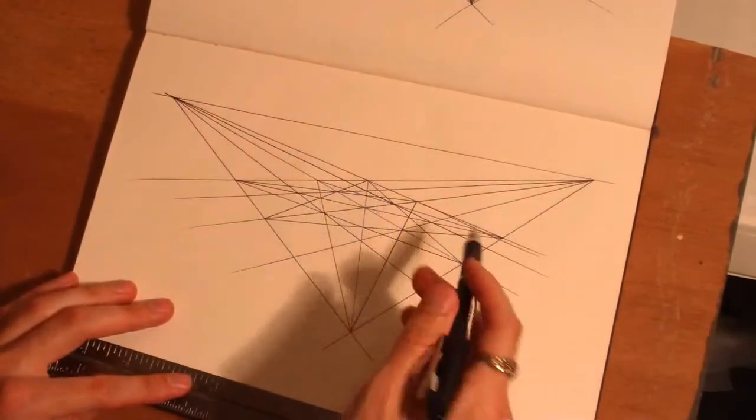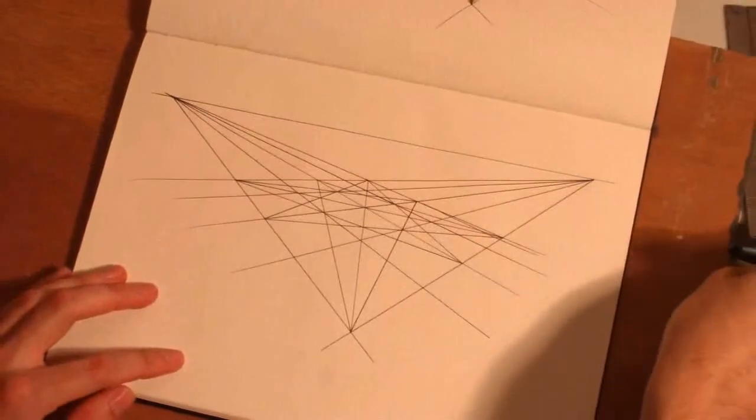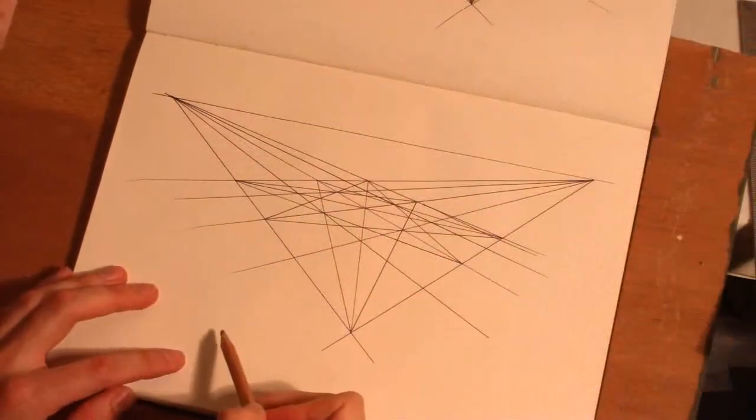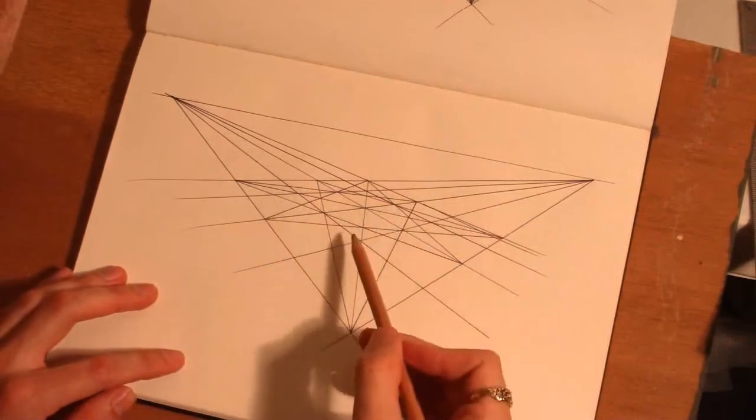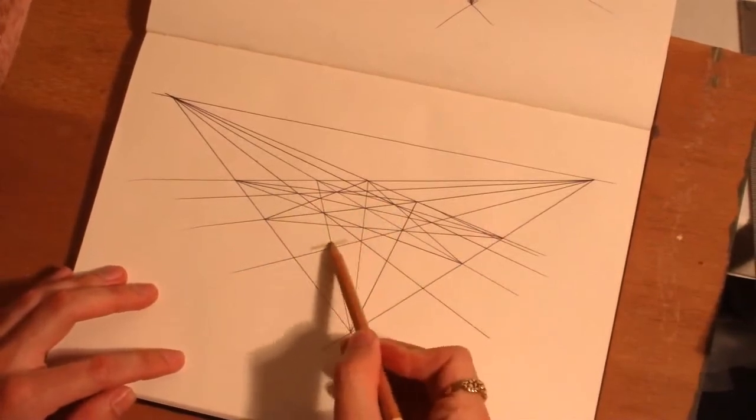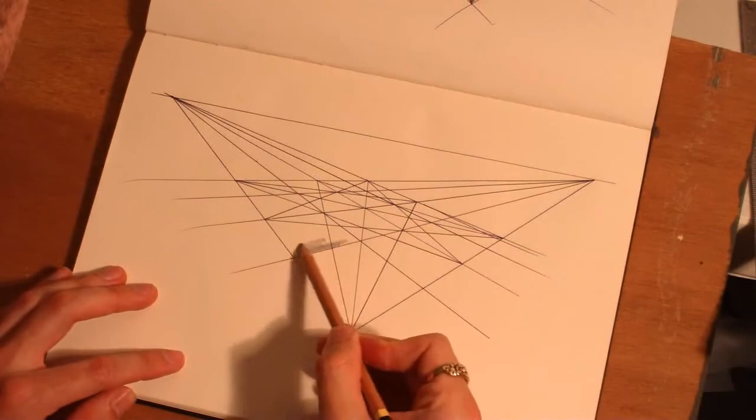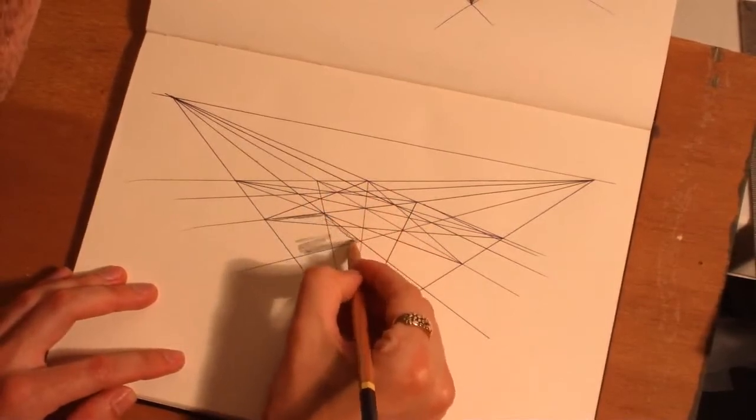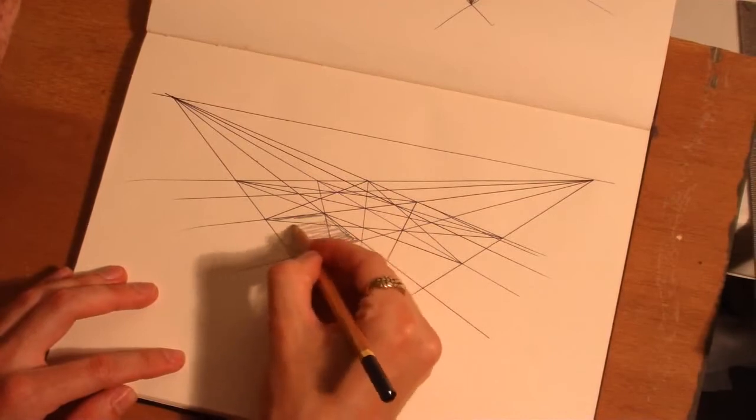So there we go. We have a grid in perspective. And just to highlight it, I'm going to take a pencil and I'm going to fill in a checkerboard pattern on the grid. Just so you can see it a little bit better.